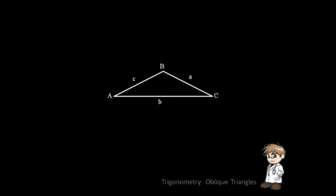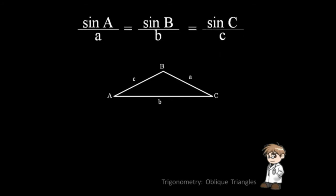The law of sine states that in any triangle, the sides are proportional to the sines of the opposite angles. If we have triangle ABC, then the formula would look like this, or this. Let us apply this to a problem.